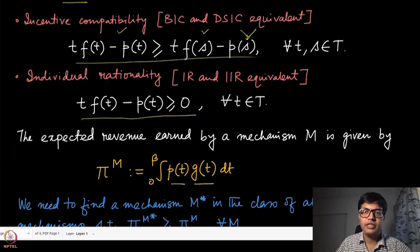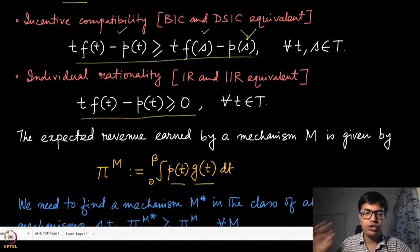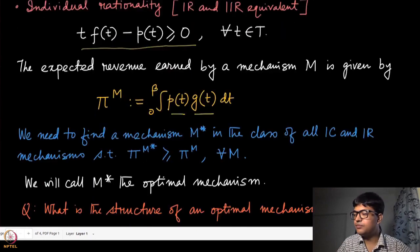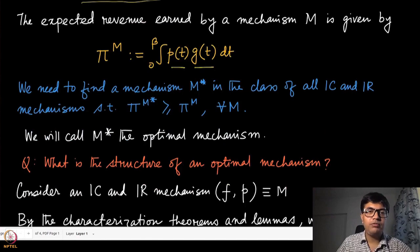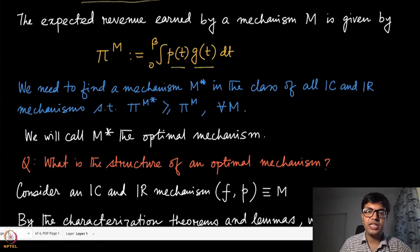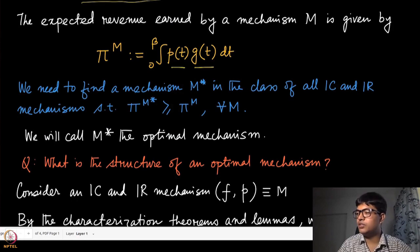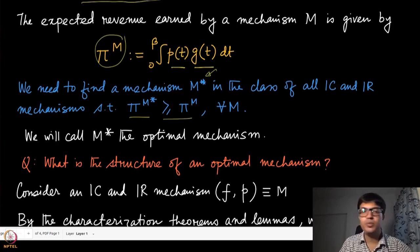The expected revenue earned by a mechanism is given by the payment multiplied by the prior probability of that specific type of the individual. The expected revenue is calculated from the point of view of the mechanism designer — even though the type is deterministically known by the player, it is not known to the designer, which is why we take the expectation. The problem of optimal mechanism is to find a mechanism m* in the class of IC and IR mechanisms that maximizes this expected revenue.